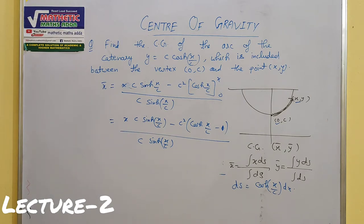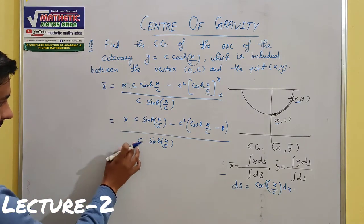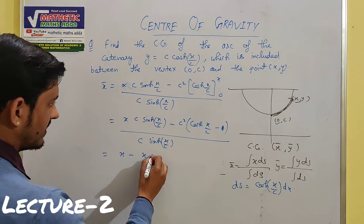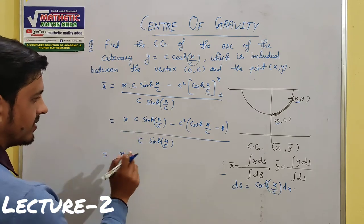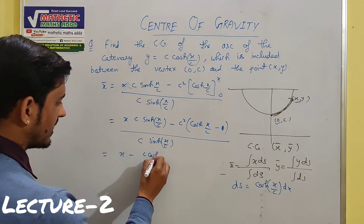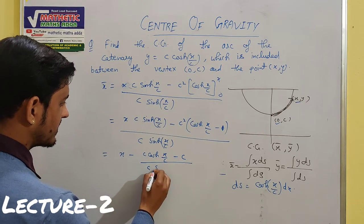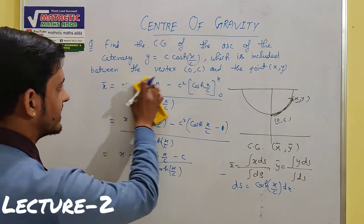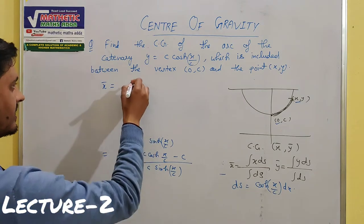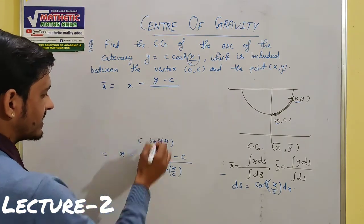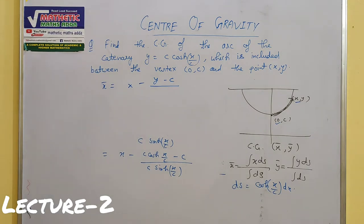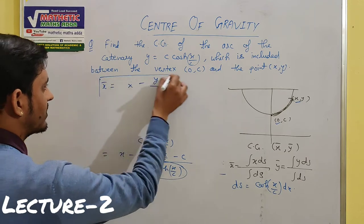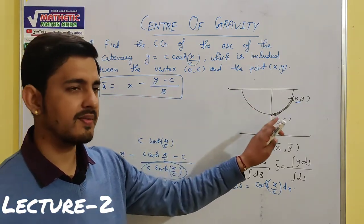Distributing and simplifying — one c cancels with c in the denominator — we get: x̄ = [x − c·cosh(x/c)/sinh(x/c) + c/sinh(x/c)]. Now c·cosh(x/c) = y (substituting from the catenary equation), and c·sinh(x/c) = s (from the catenary arc length formula derived in previous videos). So x̄ = x − (y − c)/s. This is the x-coordinate of the center of gravity.